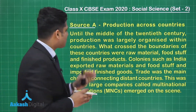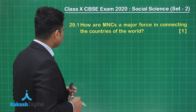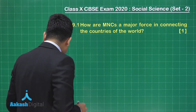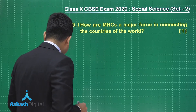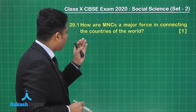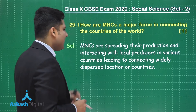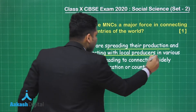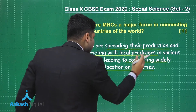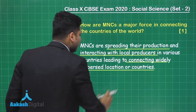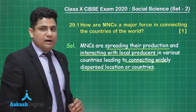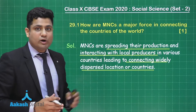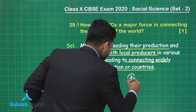The question based on source A is: how are MNCs a major force in connecting the countries of the world? It is asking students the role of MNCs in connecting major countries of the world. The answer to this question is: MNCs are spreading the production and interacting with local producers in various countries, which leads to connecting widely dispersed locations or countries. This question was of one mark, and if you have written in such a manner, you are going to get one mark.